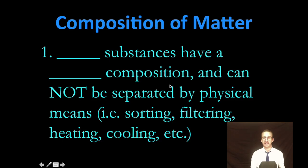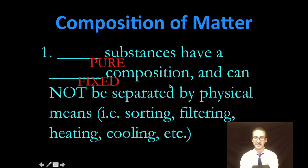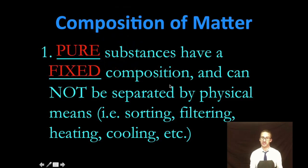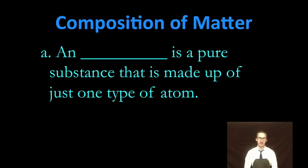Now, let's start with pure substances. They have a fixed composition, or that composition doesn't change, and cannot be separated by physical means. In other words, you can't separate a pure substance by sorting, filtering, heating, or cooling. Now, we've got two types of pure substances.